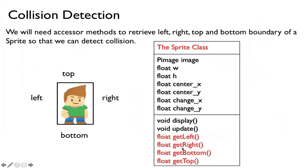So what we need to add are the following accessor methods: getLeft, getRight, getBottom, and getTop. They'll just return floats.